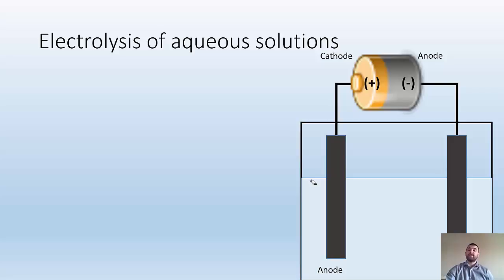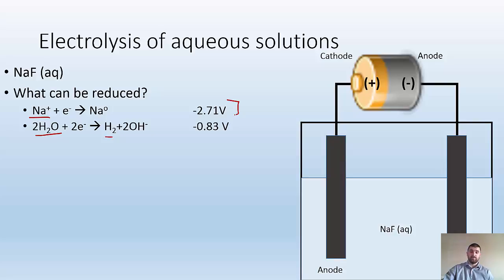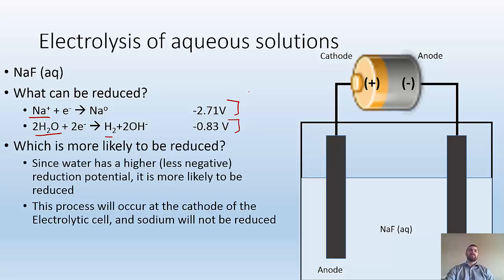Electrolysis of aqueous solutions. Let's say I had a sodium fluoride solution — I've got sodium ion and fluoride ion. What can be reduced? I have the sodium ion which can be reduced, and I also have water which can be reduced to give hydrogen gas. Which is more likely? The reduction of sodium has a negative 2.71 volts, and the reduction of water has a negative 0.83 volts. Since water has a less negative reduction potential, it's more likely to be reduced. So water is reduced at the cathode, and sodium will not be reduced.